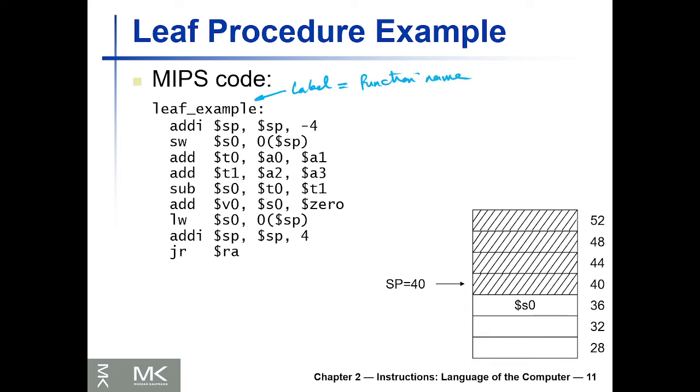We have the stack - this portion of the stack is filled and the last location in the stack that we wrote on is number 40 or at address 40. What's going to happen here is that first of all, since we're going to use S0, we should store it in the stack. To store something in the stack, we should decrease the stack pointer by four.